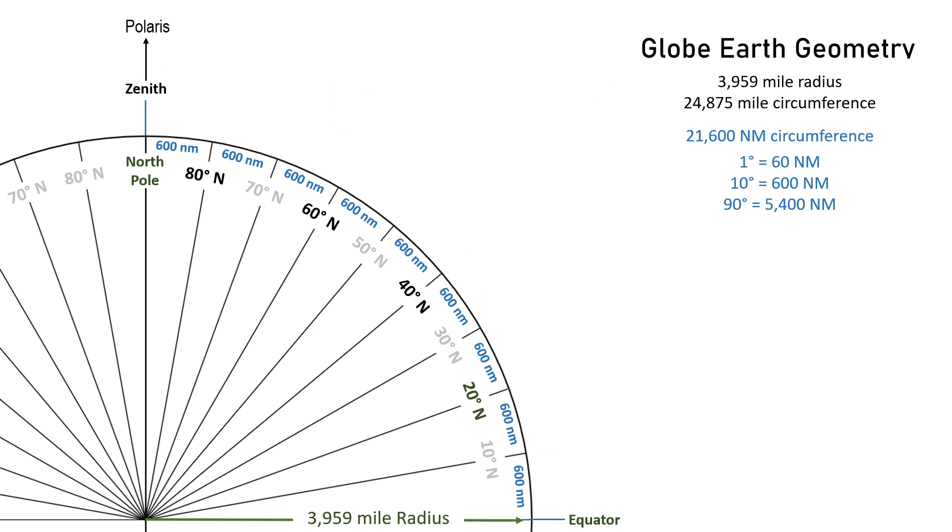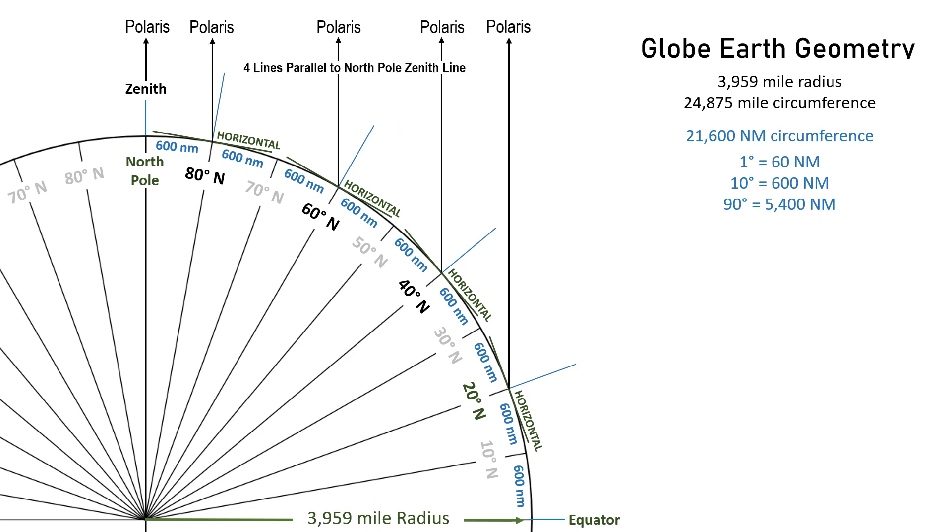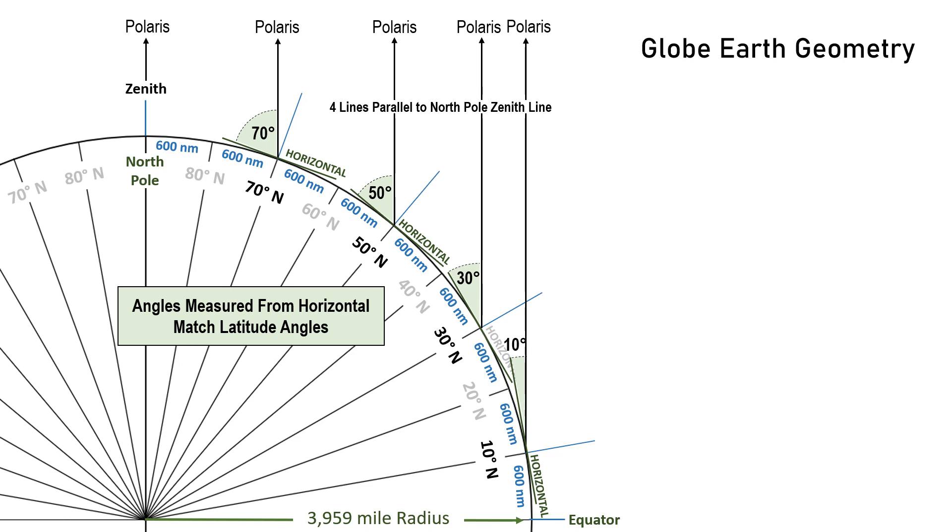So how does this relate to Polaris, which would be at zenith above the North Pole? Well, let's start by adding verticals to 80 degrees, 60 degrees, 40 degrees, and 20 degrees north latitude. Next, I'll add horizontals that are tangent to those points. Now, since Polaris is light years away from Earth, that means that its light strikes Earth in parallel rays, and that is represented by these four lines that are parallel to the North Pole's zenith line. And look at that. The angles that are measured from the horizontal match the latitude angles. And this is also true for 70 degrees, 50 degrees, 30 degrees, and 10 degrees north latitude.